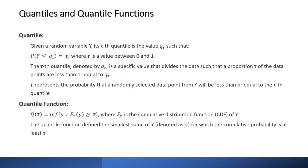What are quantiles and quantile functions? For a given random variable y, the tau-th quantile is the value q(tau) such that the probability of y being less than or equal to q(tau) equals tau, where tau is a value between zero and one. The tau-th quantile divides the data such that the proportion tau of data points are less than or equal to q(tau). The quantile function defines the smallest value of y for which the cumulative probability is at least tau.